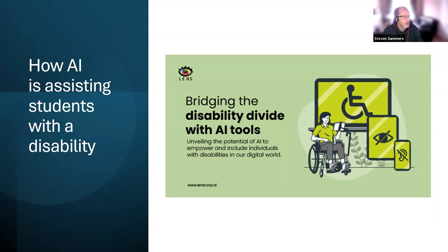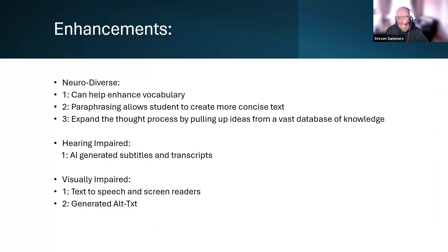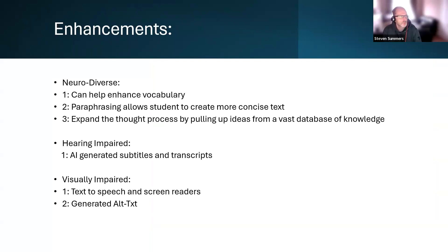This is how AI is assisting students with a disability. Looking at three different types of abilities AI can assist with, the first is neurodiverse students. Neurodiverse students can often have ideas but struggle to put them into words, so AI can help with enhancing their vocabulary.